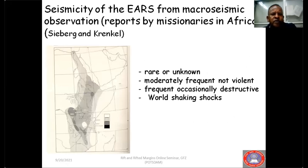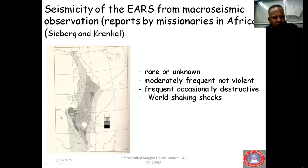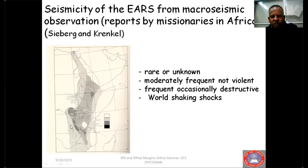This map shows the first seismicity map of the East African rift system from macro-seismic observations, compiled by Seberg and Krenkel, as reported by missionaries in Africa — a kind of strong motion record. The white background indicates rare or unknown seismicity, the slightly darker shade shows moderately frequent but not violent activity, the next stage is frequent and occasionally destructive, and the darkest areas are the strongest shaking shocks. This historical macro-seismic data broadly matches the current seismicity of the East African rift.